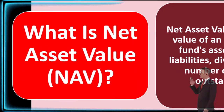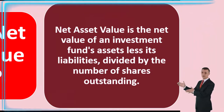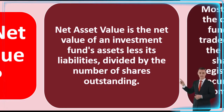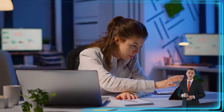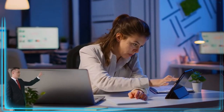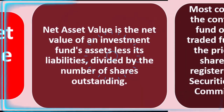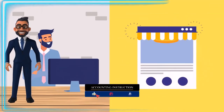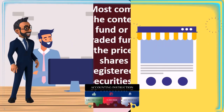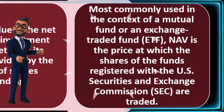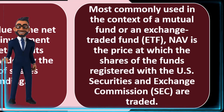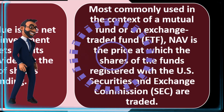So we're asking: what is Net Asset Value (NAV)? Net Asset Value is the net value of an investment fund's assets, less its liabilities, divided by the number of shares outstanding. If we're investing in a fund such as a mutual fund, that's going to be pooling money together to help us as individual investors diversify. NAV is most commonly used in the context of a mutual fund or exchange-traded fund (ETF). It is the price at which the shares of the funds registered with the U.S. Securities and Exchange Commission (SEC) are traded.